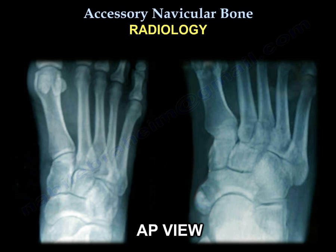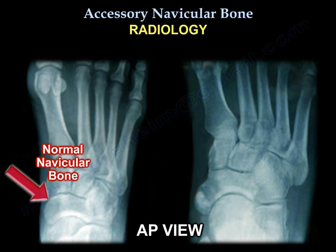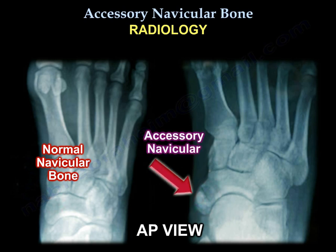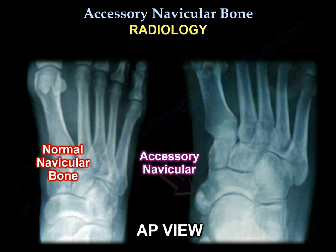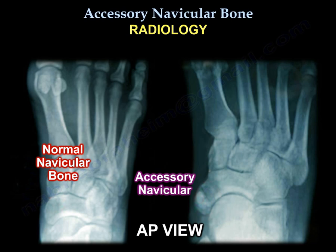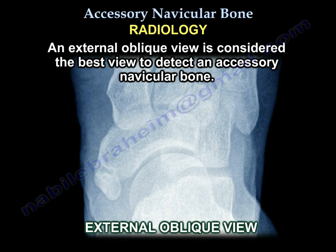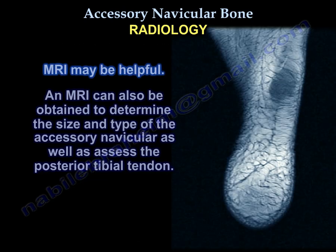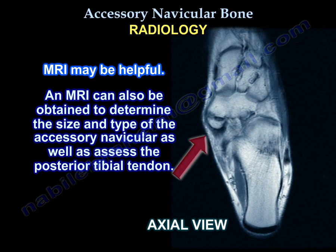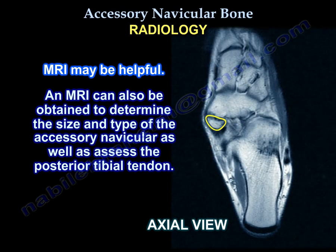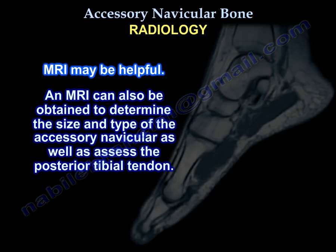Relative to a normal foot as seen on the left, a plain x-ray AP view can detect the accessory navicular as seen on the right. An external oblique view is considered the best view to detect an accessory navicular bone. An MRI can also be obtained to determine the size and type of the accessory navicular, as well as assess the posterior tibial tendon.